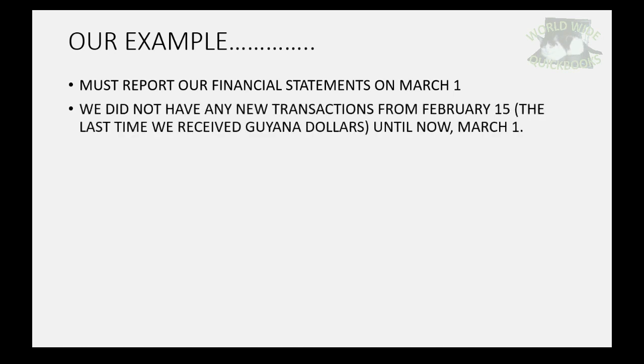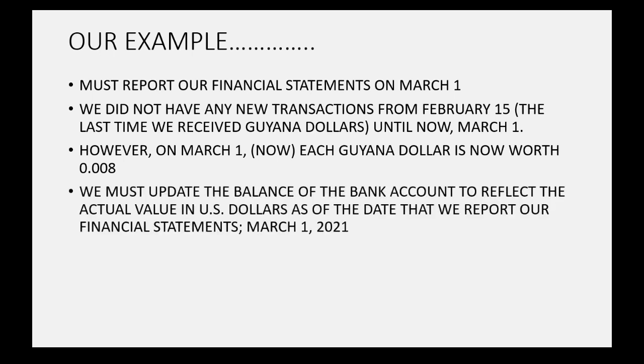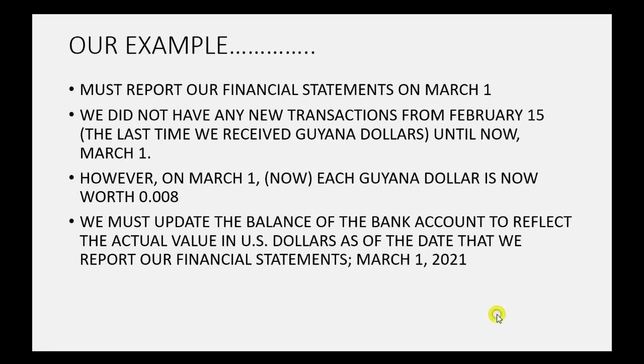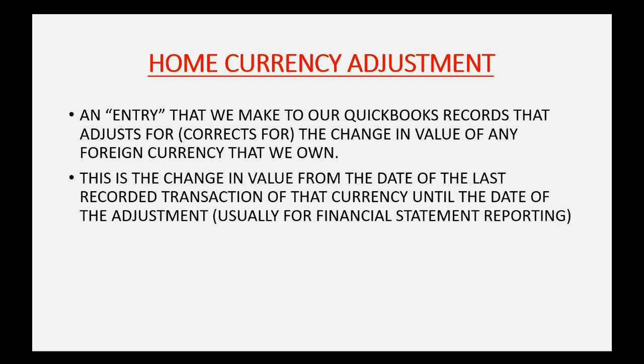We did not have any new transactions from February 15th until now, March 1st. However, on March 1st each Guyanese dollar is now worth 0.008. We must update the balance of the bank account to reflect the actual value in US dollars as of the date we report our financial statements. To do this we make a home currency adjustment — an entry that we make to our QuickBooks records that adjusts for the change in value of any foreign currency that we own, from the date of the last recorded transaction until the date of the adjustment.